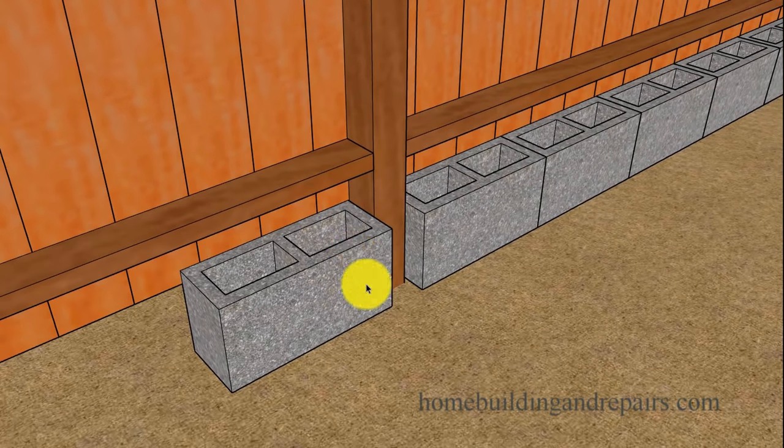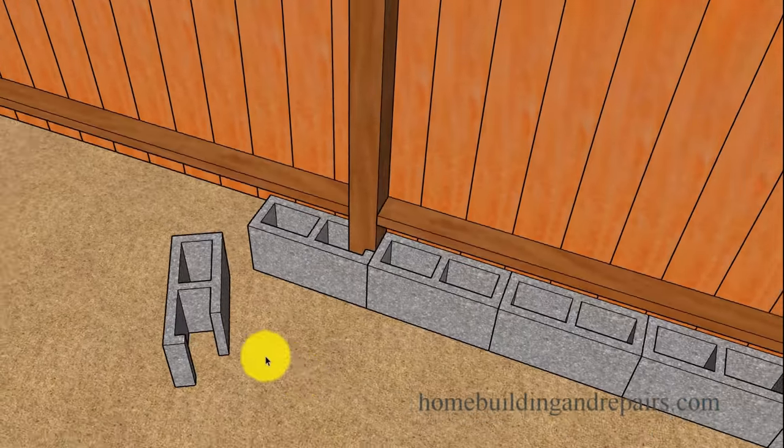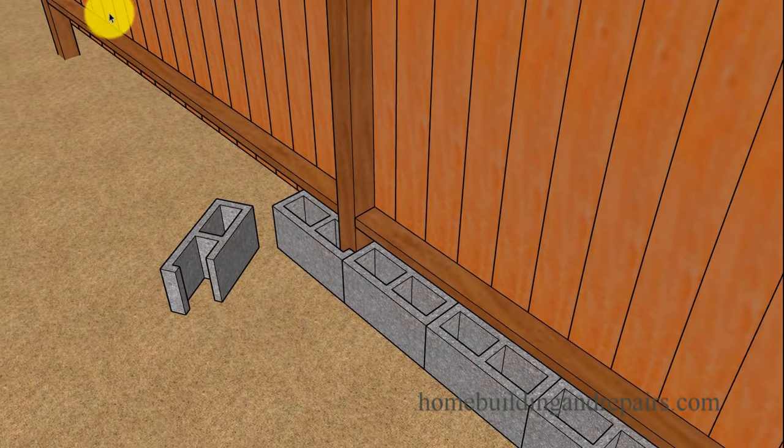Now the only problem with doing something like this is that the wood post won't be protected if you backfill it. But that problem can easily be solved by notching the block around the post. Give you an idea what the block might look like there.